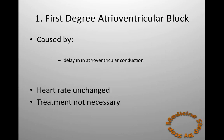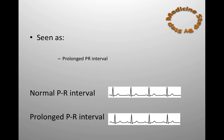First degree atrioventricular block is caused by a delay in the conduction from the atria to the ventricles. The heart rate is unchanged and treatment is not necessary. It is seen on an ECG as a prolonged PR interval.